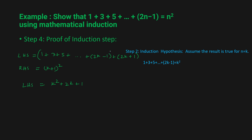So the LHS becomes k² + 2k + 1. Expanding the RHS, (k + 1)² = k² + 2k + 1. Therefore LHS equals RHS, and we have proved that the statement is true using mathematical induction — hence proved.